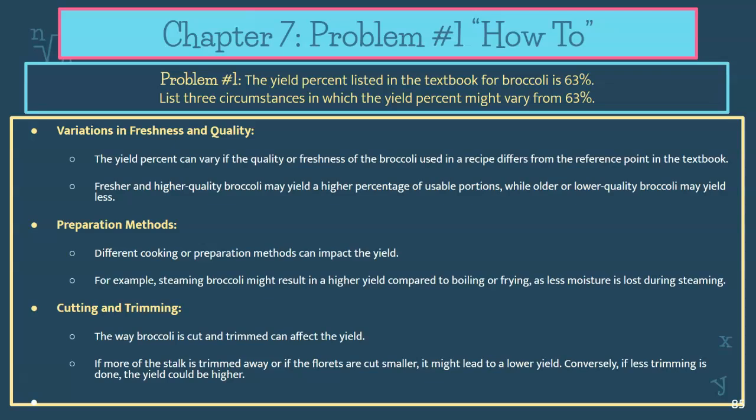If you're buying lower quality broccoli — maybe discounted broccoli because it's older — it's going to wilt quicker, and you might not get as much edible portion from that broccoli. So that's going to change your yield percent.